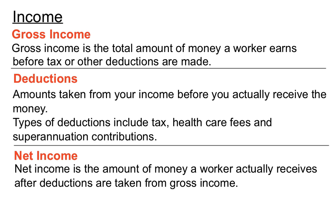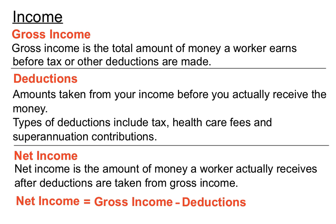We can have a pretty simple calculation to sum this up. To find net income — and you're often asked to in questions — we take the gross income given to us in the question, and we take off any of the deductions described in the question, such as tax, healthcare fees. They'll tell us each of those amounts, and we just take the gross income and minus all those different amounts quoted for tax, healthcare fees, and superannuation, etc.